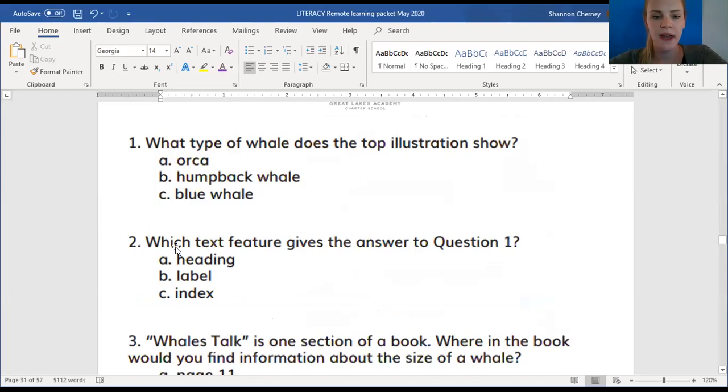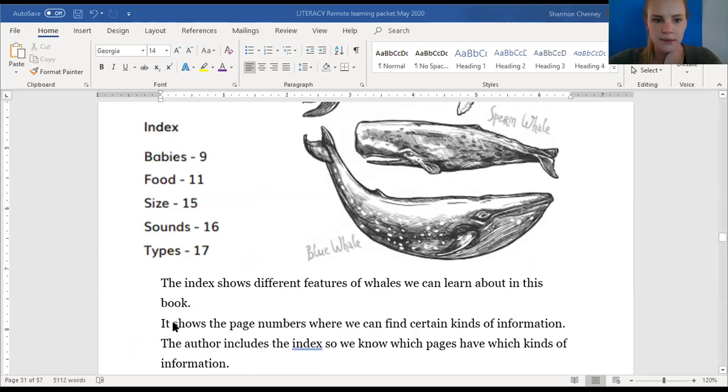Now let's match it with an answer choice. If you think it's A orca, circle A. If you don't think it's A orca, cross out orca, humpback whale, or blue whale. Now, make your choices now. Good. Next. Number two. Which text feature gives the answer to question one? Let's read that again together, starting with the word which. On two. One, two. Which text, I do not have everybody reading with me. Try again. One, two. Which text feature gives the answer to question one? So, to figure out this question, we need to go to question one, which is right here. And we need to tell them the text feature that gives the answer to question one. So the answer to question one was one of these types of whales. And what text feature did I use to figure out what that whale was called?